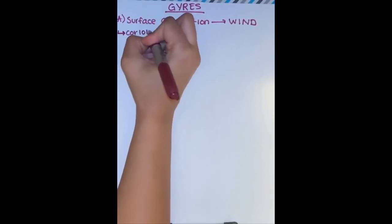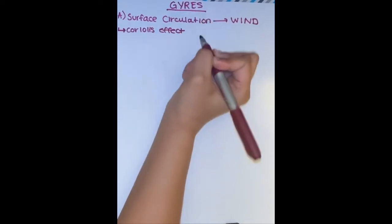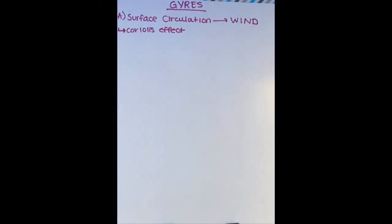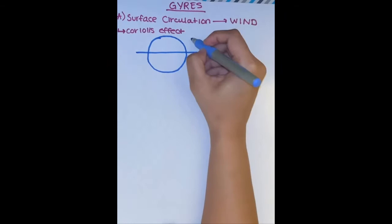The wind patterns are controlled by something called the Coriolis effect. The Coriolis effect occurs due to Earth's rotation and results in a deflection towards the right in the northern hemisphere and to the left in the southern hemisphere.